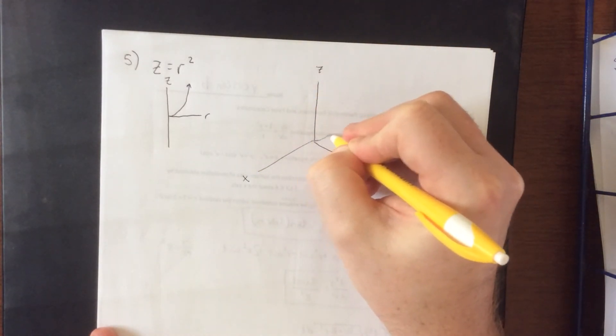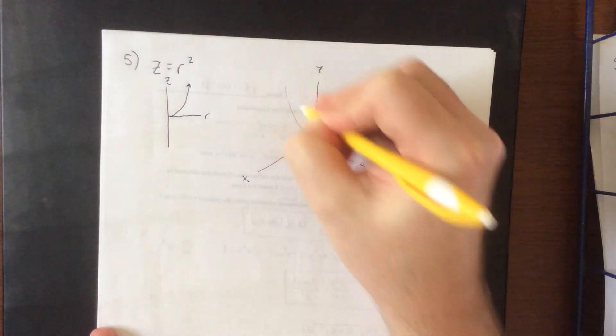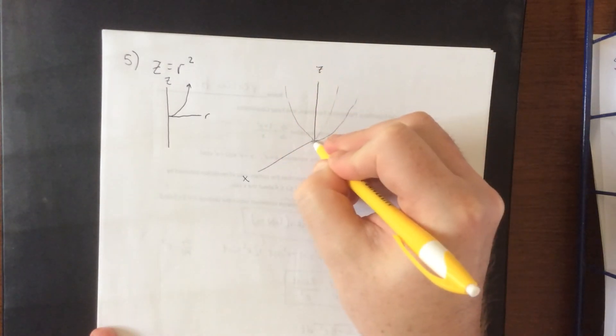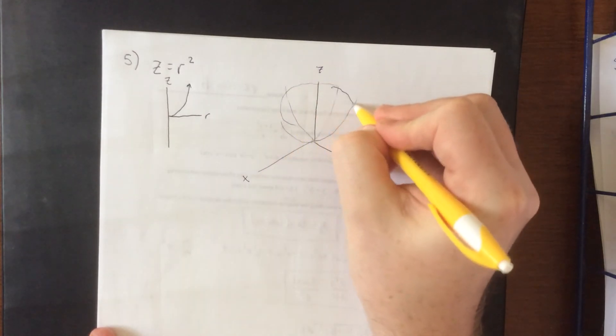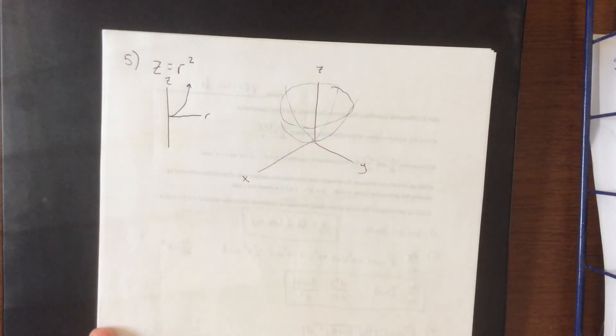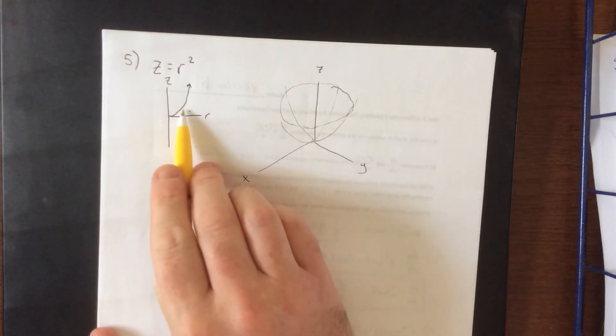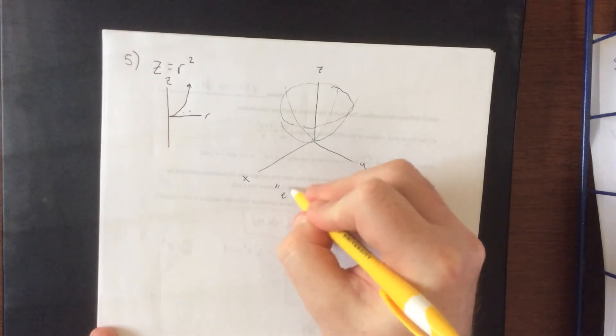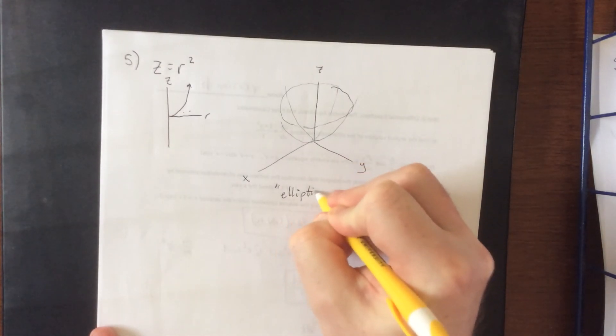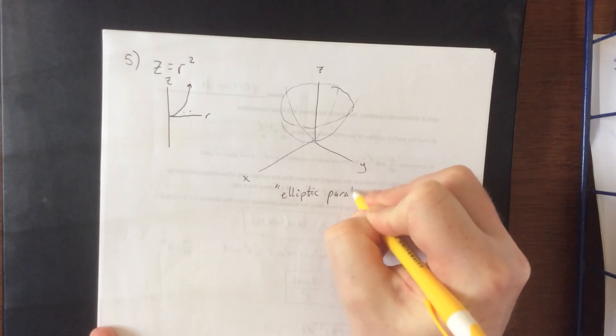Then we're going to wind up with something that is parabolic in nature in all four of these directions with a circular cross section. That's why I like to draw it like this and say, all right, rotate that about the z axis. And that's the surface that we're going to get out of this. This would be your elliptic paraboloid.